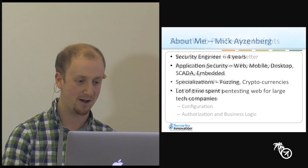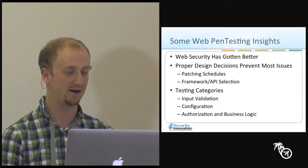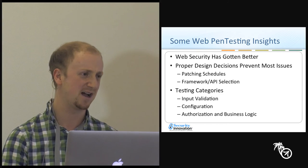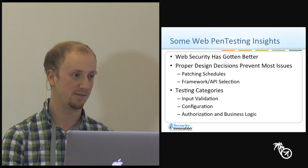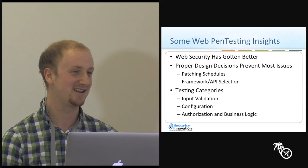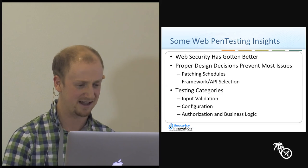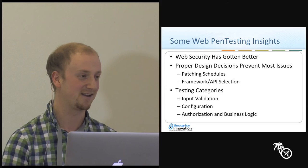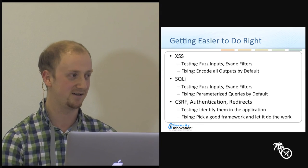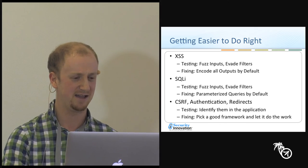I've come to a few observations I want to share quickly. One thing I've noticed in this half decade is that web security, for the most part, has gotten a lot better for new applications built on modern frameworks. By putting effort into proper security design and research before building the application, it prevents a lot of the issues we're so accustomed to. Even though web security pen testing is a very complex field, I want to focus this presentation on three major categories: input validation, configuration, and authorization and business logic. It looks like it's getting easier to do things the right way the first time.